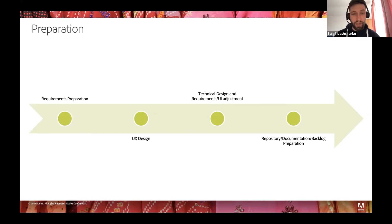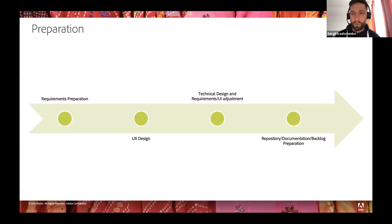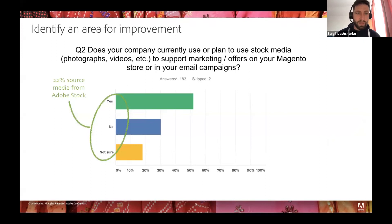After a couple of cycles of technical design, UX design, and requirements updates, when we were all on the same page, we needed to get the initial repository with some basic code we could start on. Documentation is actually the result of the designs and requirements, so we had the roadmap, implementation guide, and mockups. For backlog preparation, we created stories for all requirements, assembled them into tasks, identified dependencies, and when all that was ready, the project could be started.